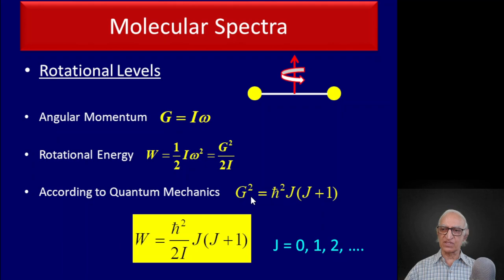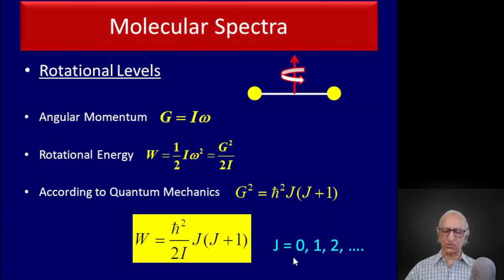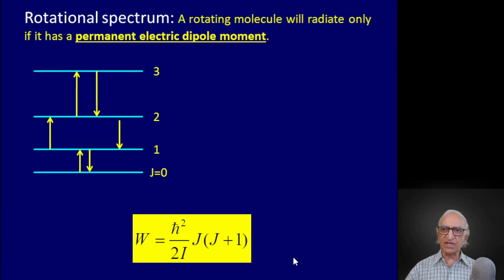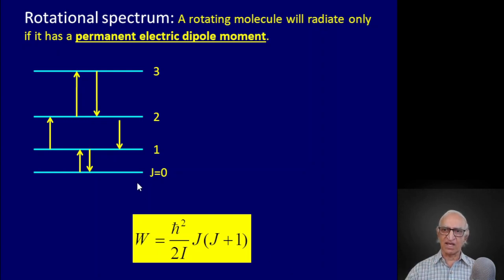If we substitute this formula for g squared into the formula for rotational energy, we get: W equals h-bar squared divided by 2I, multiplied by j(j+1), where j can take values 0, 1, 2, 3, and so on. The rotational levels are therefore a discrete set of energy levels, and importantly, because the energy goes as j(j+1), the energy level spacing increases as we go to larger and larger quantum numbers.